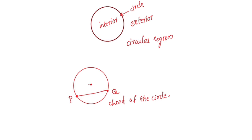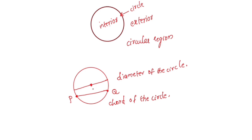If a line segment passes through the center of the circle, it is called a diameter of the circle. We will put the longest chord through the center of the circle — that chord is the diameter.